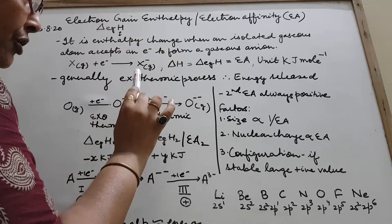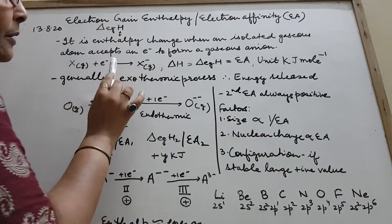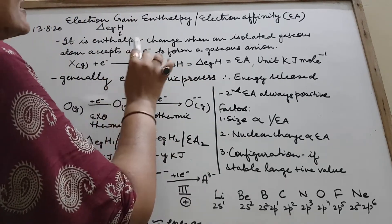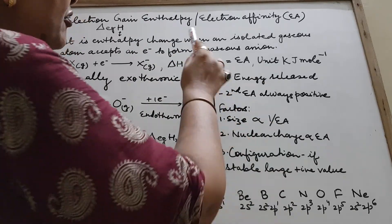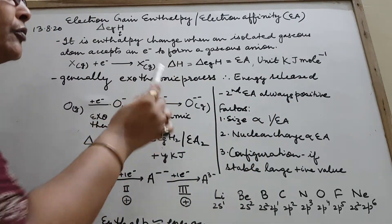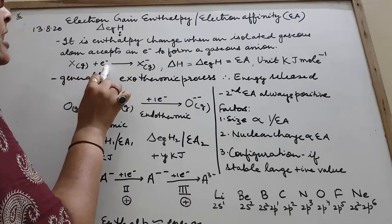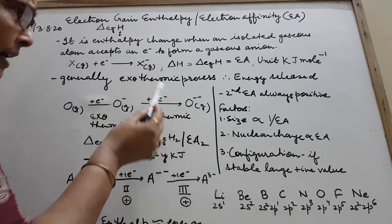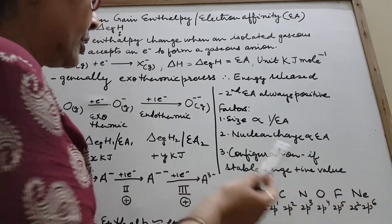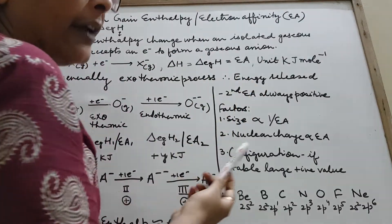Electron gain enthalpy is the enthalpy change — energy change — when an isolated gaseous atom accepts an electron to form a gaseous anion. Say you have atom X in the gaseous form; it gains an electron and gets converted into X⁻ anion in the gaseous form. The energy change that takes place is called electron gain enthalpy, or electron affinity (EA).